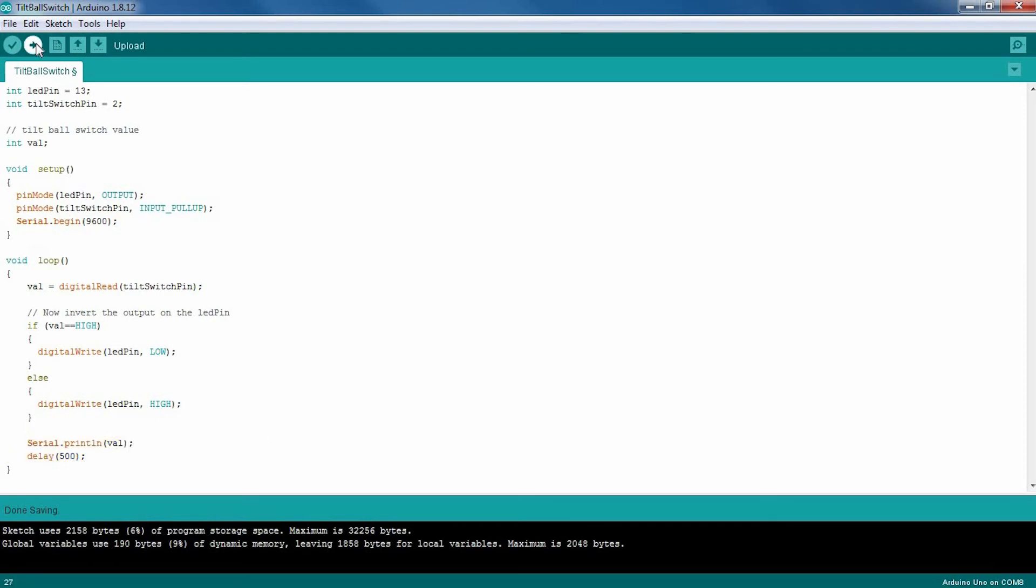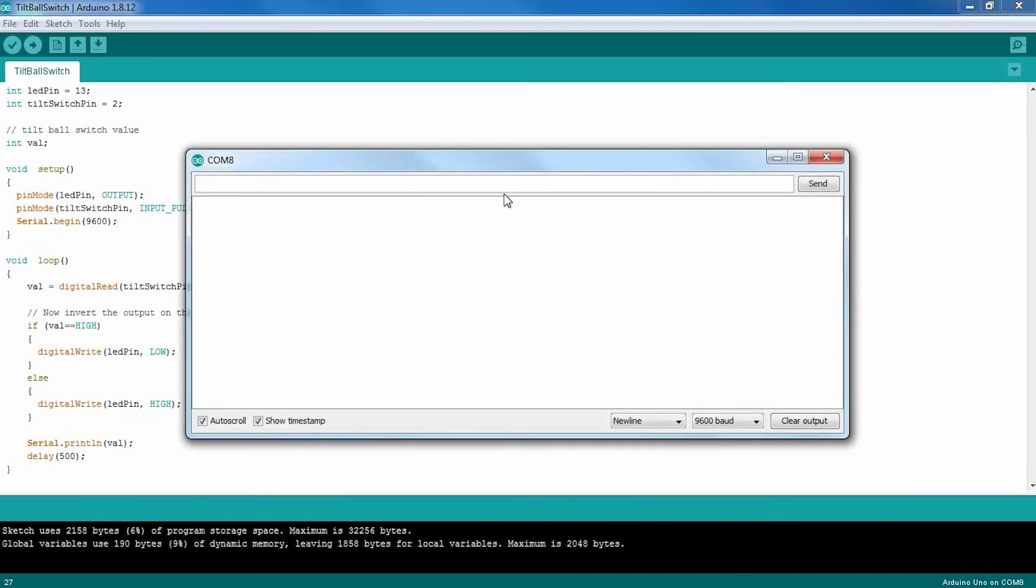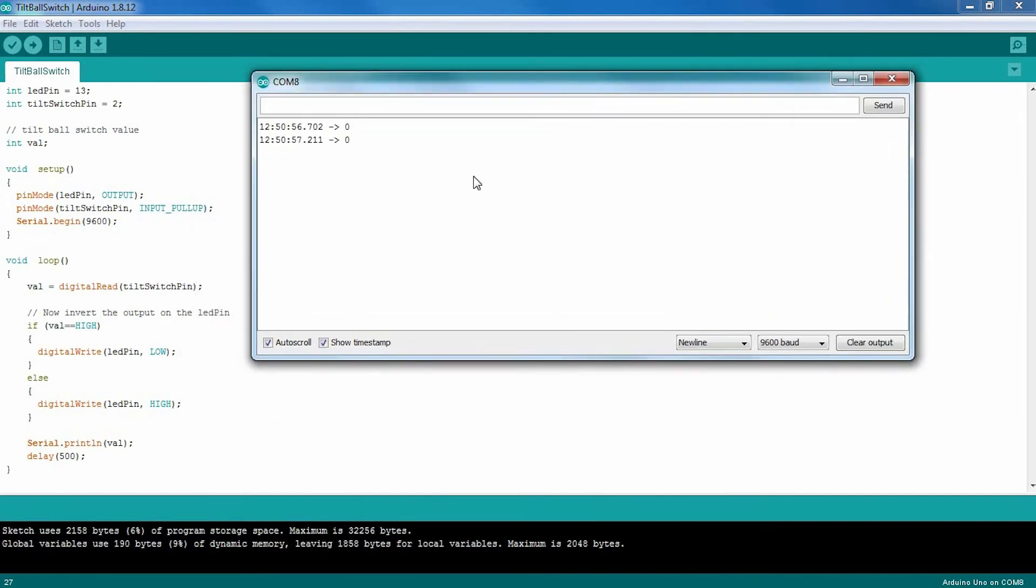I'm going to upload the sketch and run it. Let's start the serial monitor to print out the incoming values for the tilt ball switch based on the position of the switch.